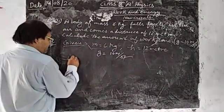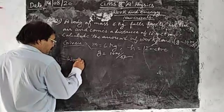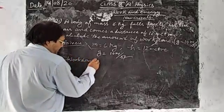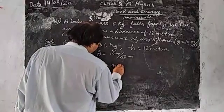So what is the work done formula? Work done W is equal to M G H.